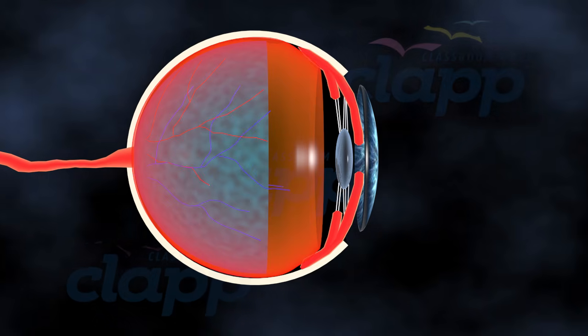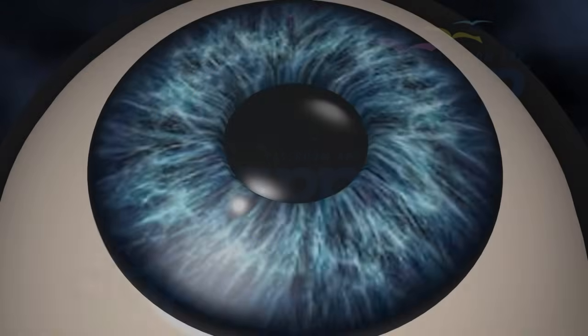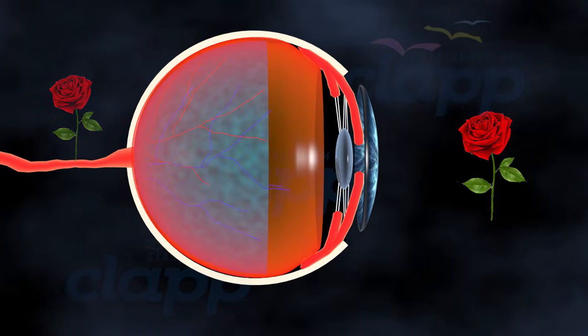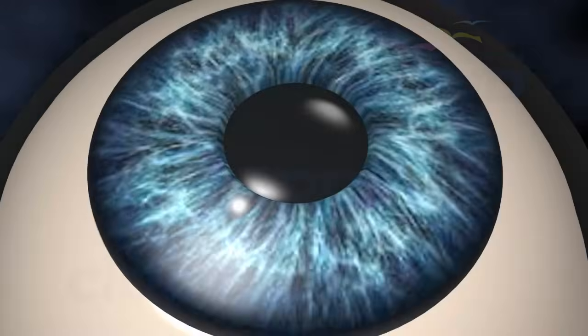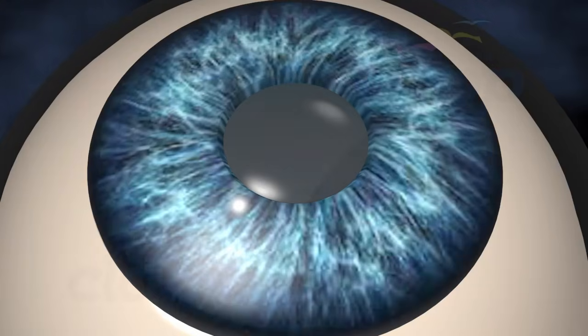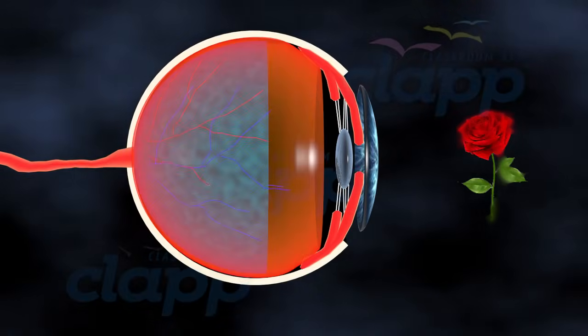As we age, the lens in our eyes becomes less flexible and transparent. This natural aging process can lead to the development of cataracts. Cataracts occur when the lens of your eye becomes cloudy, making it difficult to see clearly.